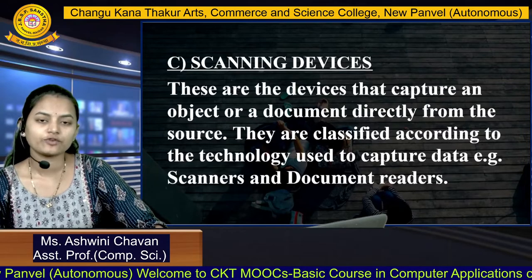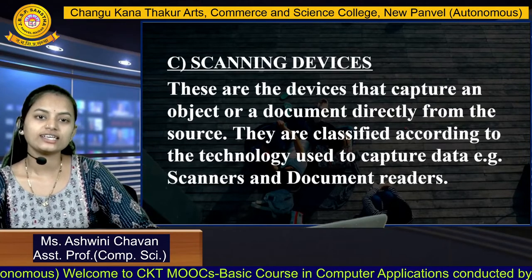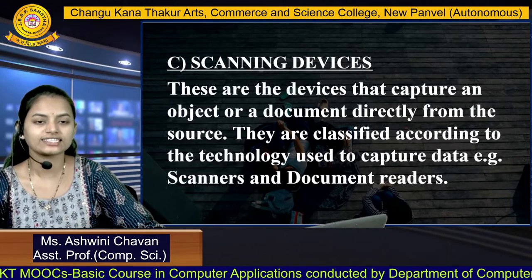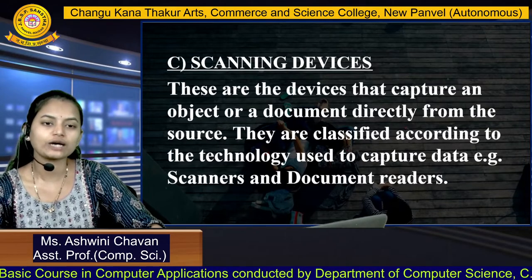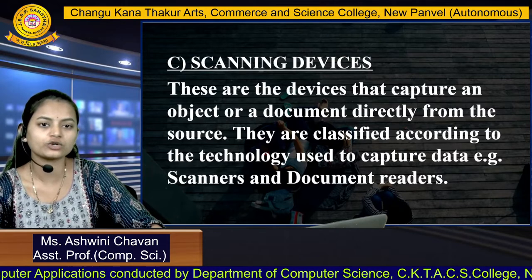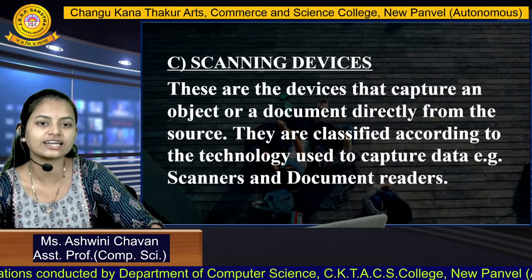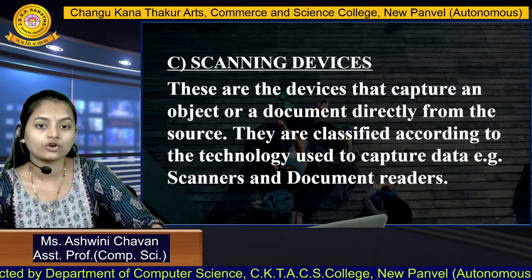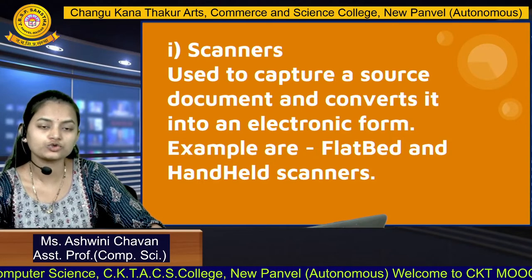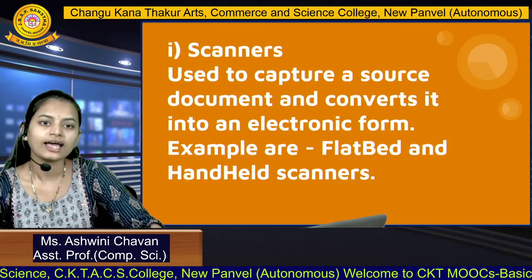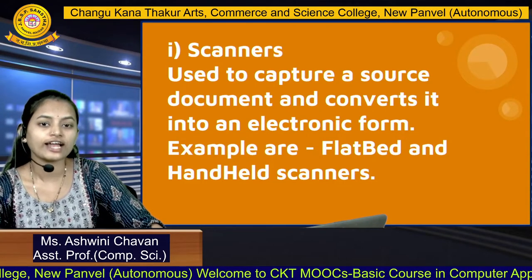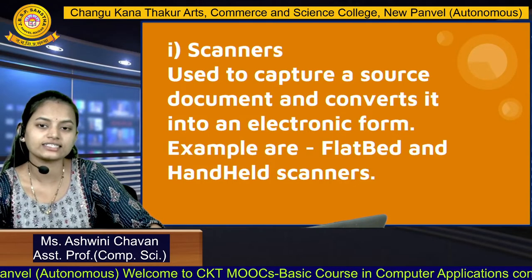The next type of input devices are the scanning devices. These are devices that capture an object or document directly from the source, and are classified according to the technology used to capture data. Examples include scanners and document readers. Scanners are used to capture a source document and convert it into an electronic form. Examples include flatbed and handheld scanners.